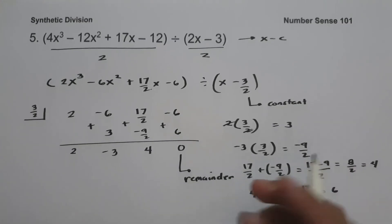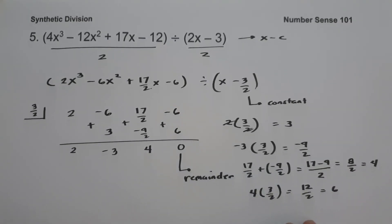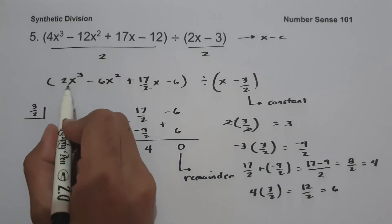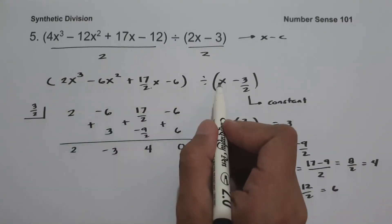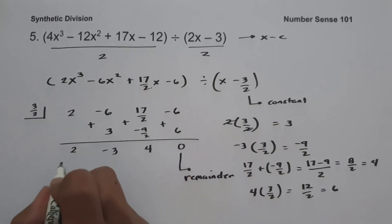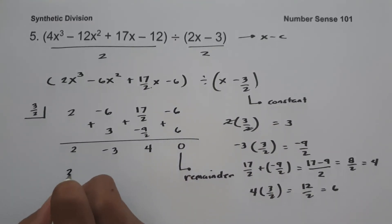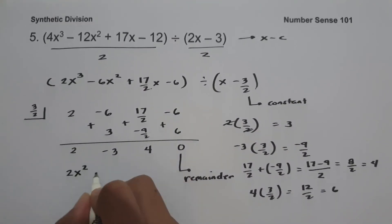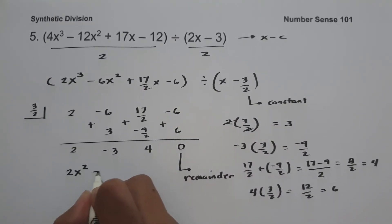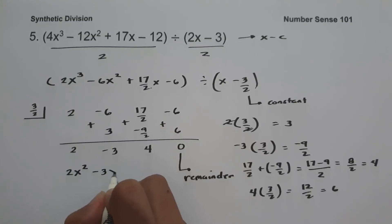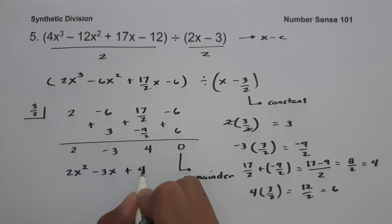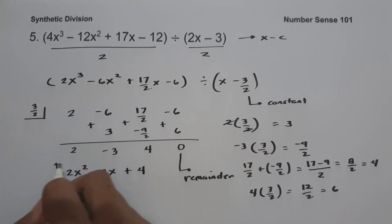To write our answer, we have 2x cubed divided by x, which is 2x squared. Then negative 3, then x plus 4 as a constant. And this will be our answer: 2x squared minus 3x plus 4.